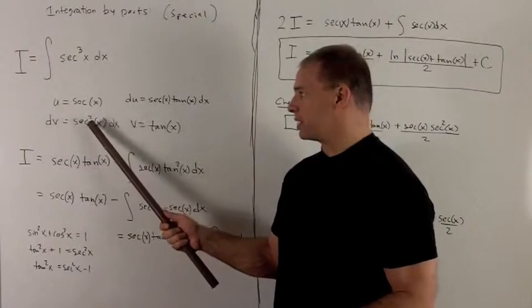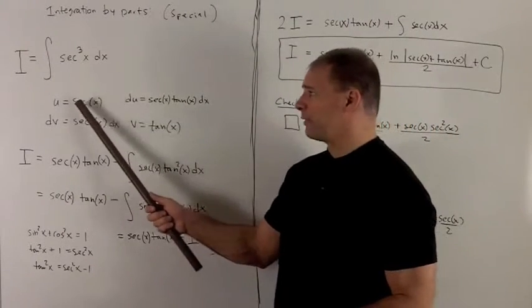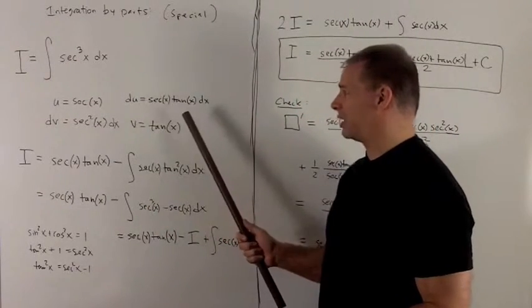So I put my secant squared in, any derivative goes to tan x, then derivative of secant is going to be secant tangent times dx.